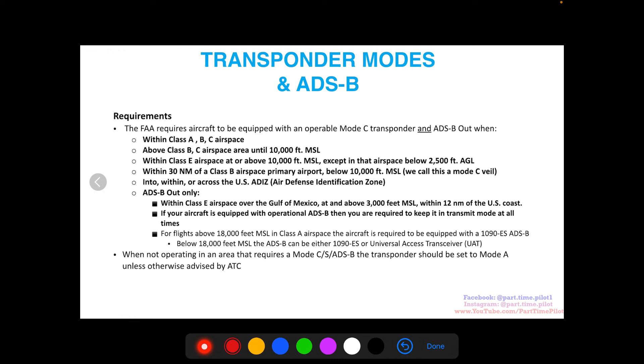Finally, when not operating in an area that requires mode C, S, or ADS-B, the transponder should be set to mode A unless otherwise advised by ATC. This is ATC trying to reduce the amount of information on their screen, so unless you're in an area where it's required and you haven't been asked, just keep it in mode A.